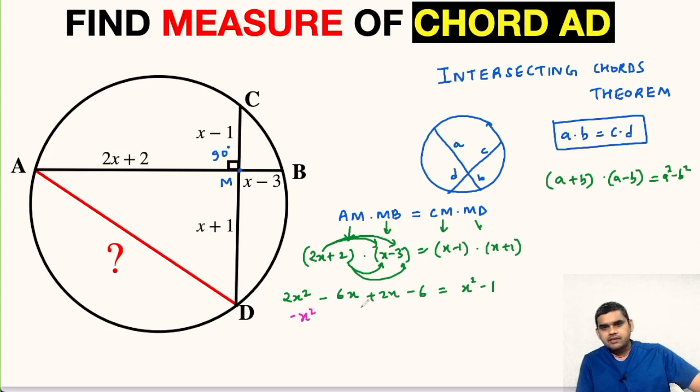Let us subtract X squared from both sides. So this will get cancelled. Also let us add 1 to both sides. So this will get cancelled. So we will be left with X squared. This will sum up and will become minus 4X. This will be minus 5 equal to 0.